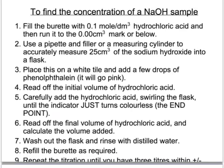You'd read off the initial volume of the hydrochloric acid and then add it gradually, swirling the flask as you go to mix it up until the indicator just turns colourless. That's called the end point.